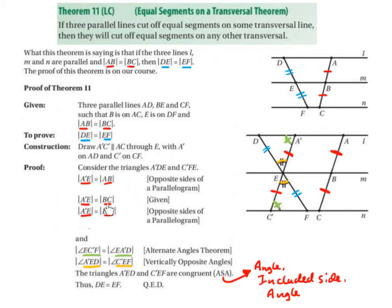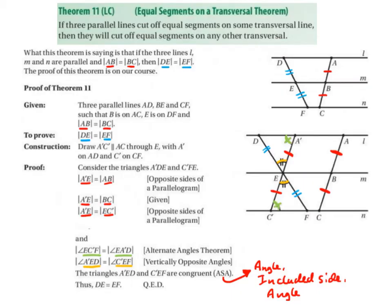Also, A'E equals EC', so all four of these line segments are of equal length, marked with red lines. The angle EC'F equals the angle EA'D, shown in green, because alternate angles inside parallel lines are equal. Lines AD and CF are parallel with a transversal cutting through, so these two green angles are alternate to each other and therefore equal.